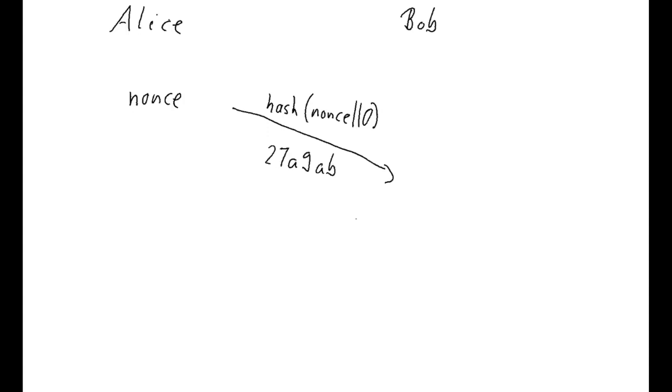So Bob receives that and then it proceeds as before. So he sends his choice, for example, zero. And now in the third message,